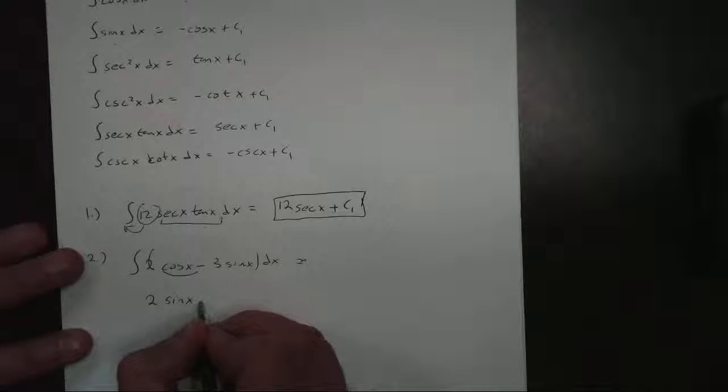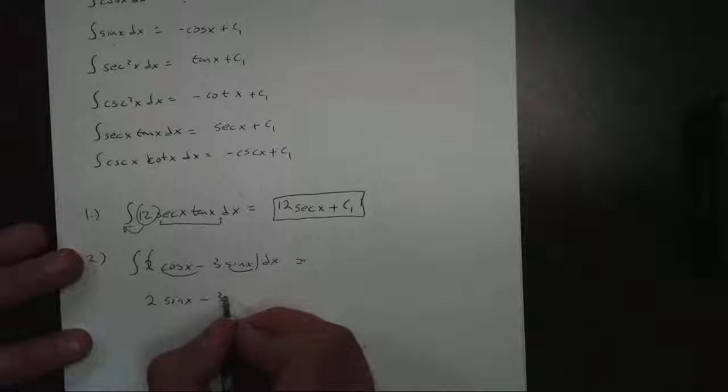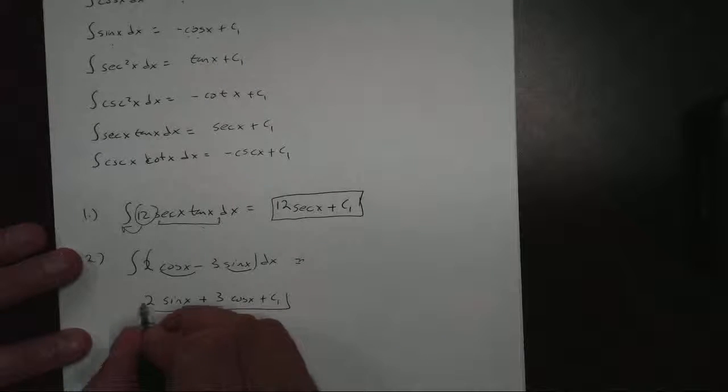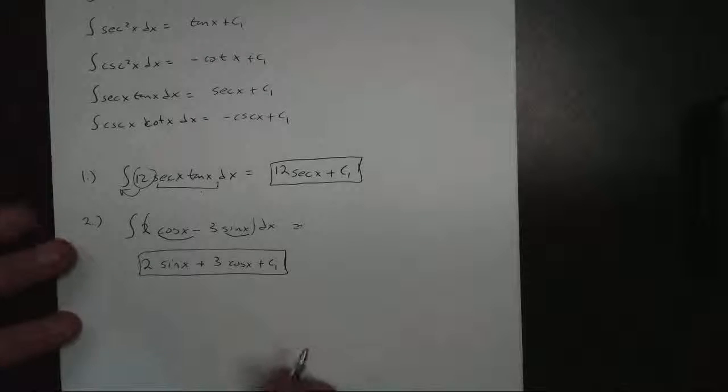Well, we know that's the sine of x. Minus, what function's derivative is sine? That's negative cosine. Makes that a plus cosine of x plus c1. And there's our derivative. I mean, our antiderivative right there. Very easy to do.